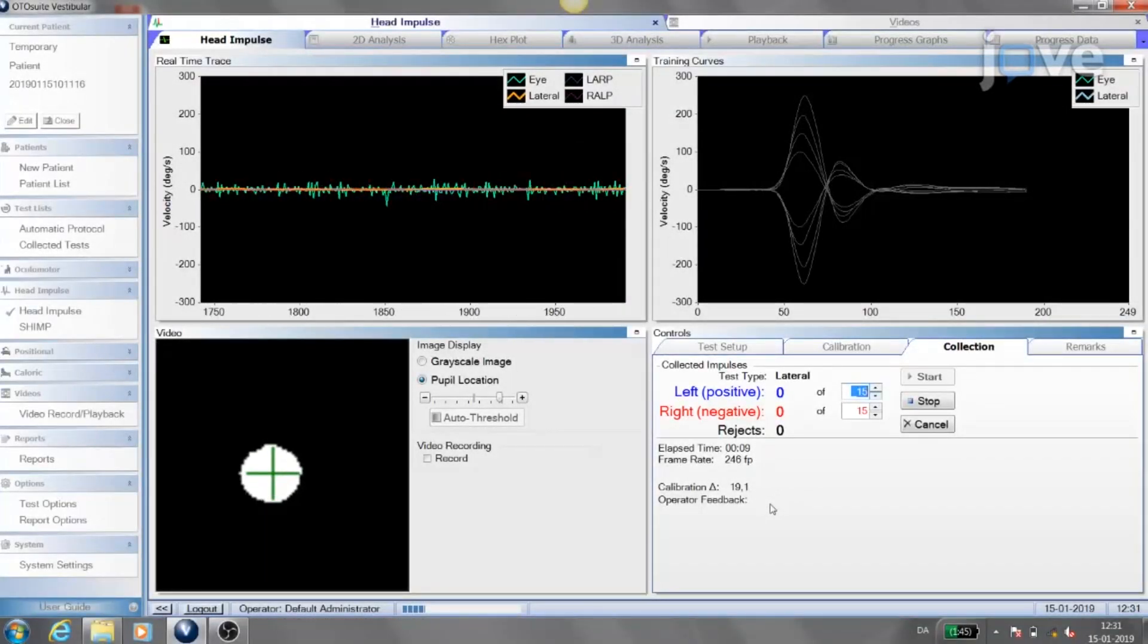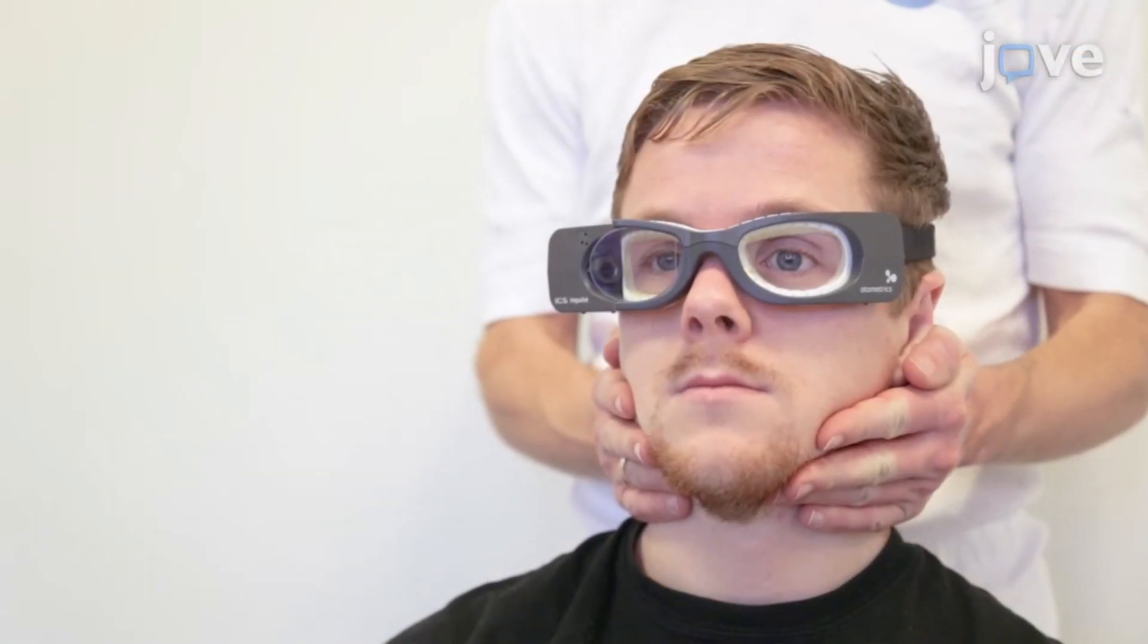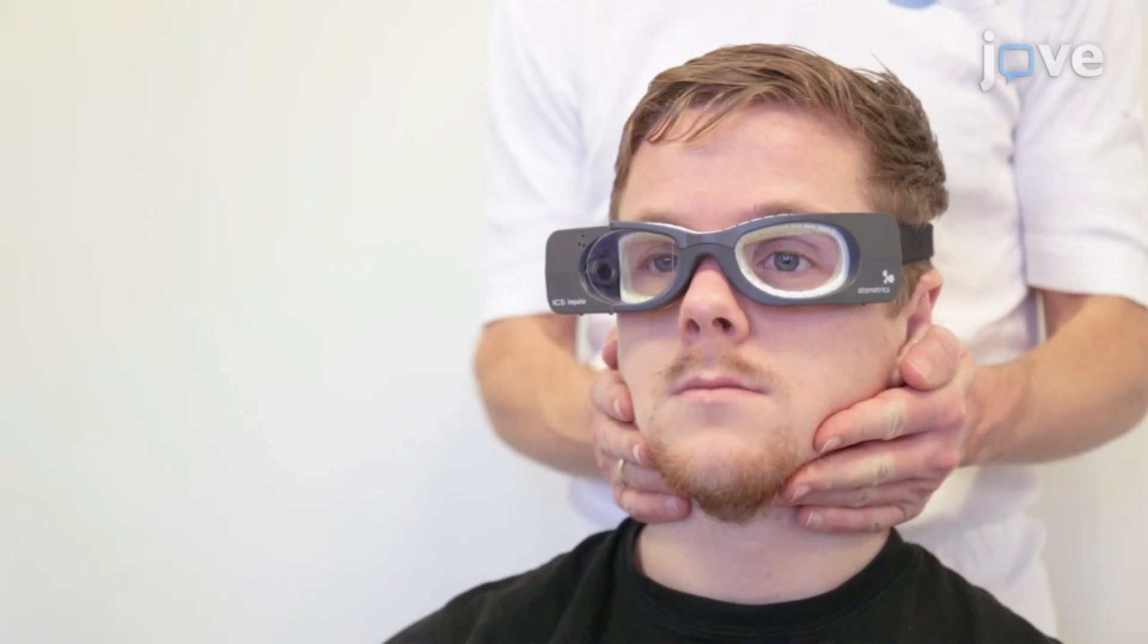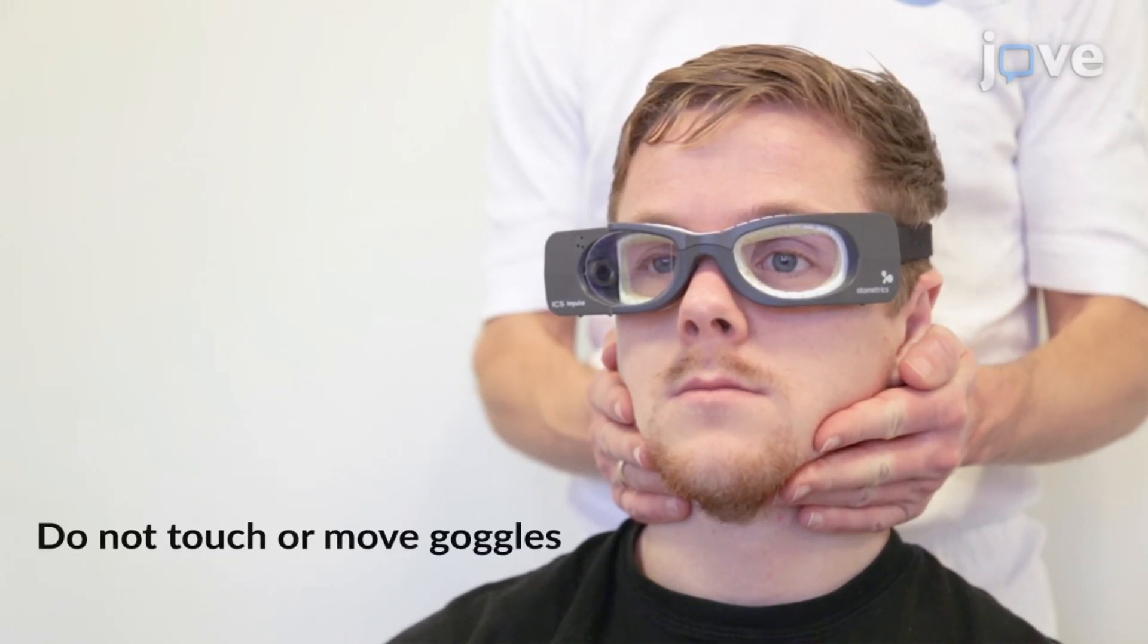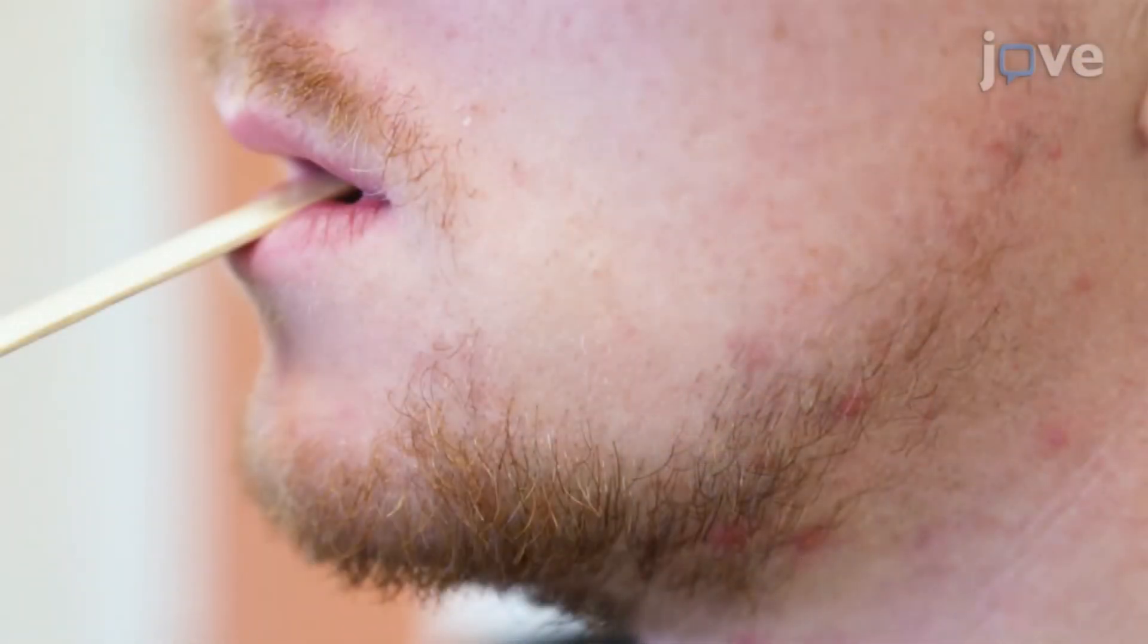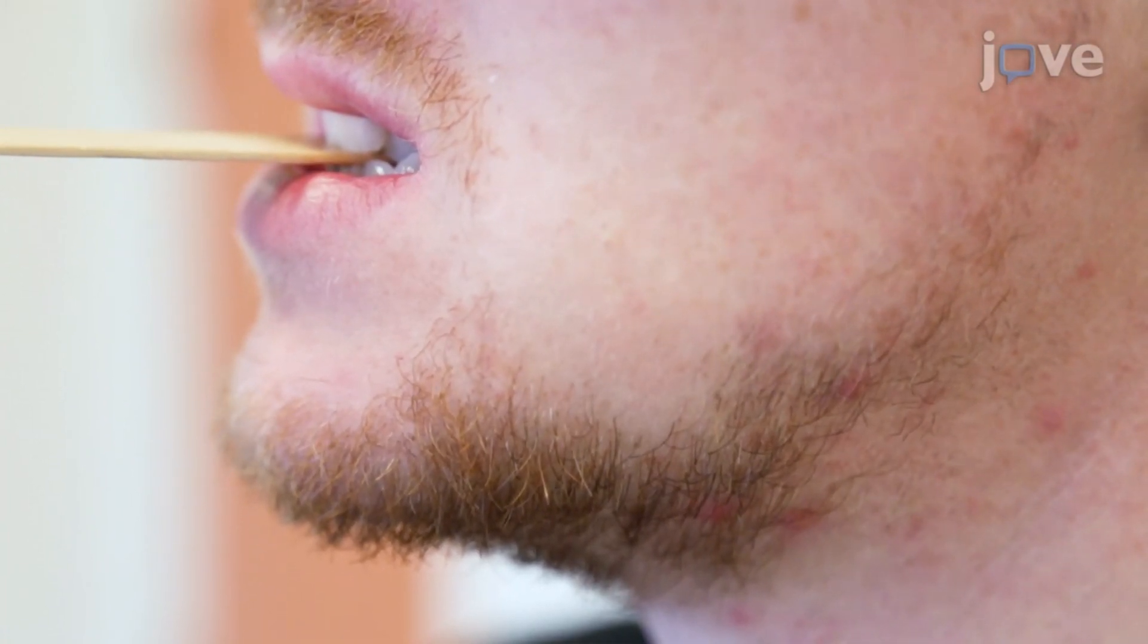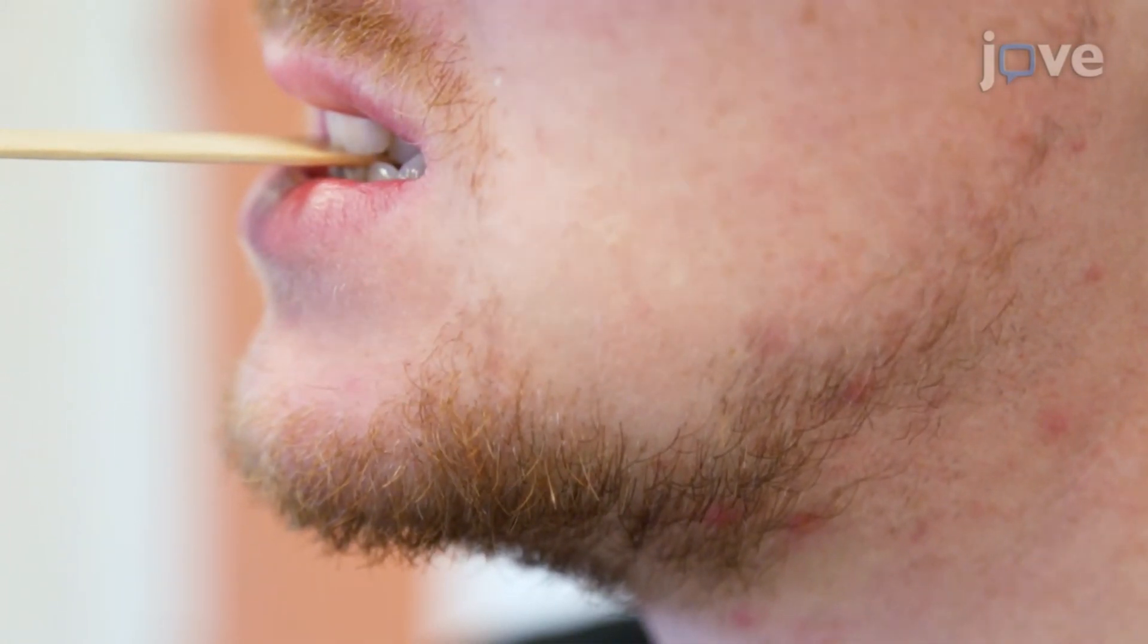Prior to initiation of VHIT testing, keep in mind that head impulses must be delivered abrupt, fast, and unpredictable. Then, to perform horizontal testing of the six semicircular canals, or SCC, place hands on the jaw or on the top of the head. Throughout the entire test, ask the participant to clench their teeth when head impulses are applied, so that jaw movement is reduced.